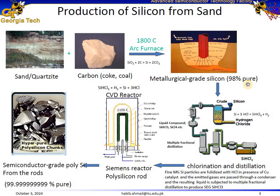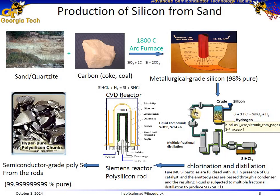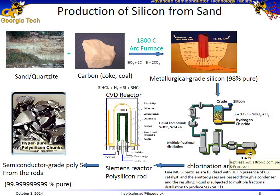This process produces metallurgical-grade silicon, which is 98% pure. Then, in the next step, we convert the metallurgical-grade silicon into trichlorosilane. Silicon is reacted with hydrogen chloride in a chlorination and distillation unit, forming a mix of trichlorosilane and other components, and these are separated through multiple fractional distillations to achieve a purified form of trichlorosilane.